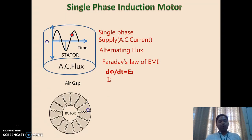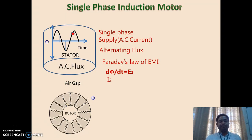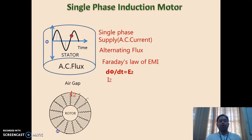So we get EMF in the rotor — let it be E2. As rotor conductors are in a closed circuit, current will also flow in the rotor conductor — let that current be I2. The alternating flux passes through the air gap, cuts the rotor conductor, and there is a rate of change of flux with respect to time. So EMF is induced in the rotor conductor and current flows. The direction of this current is given by Lenz's law, which states that the direction of current is such that it opposes the cause producing it.